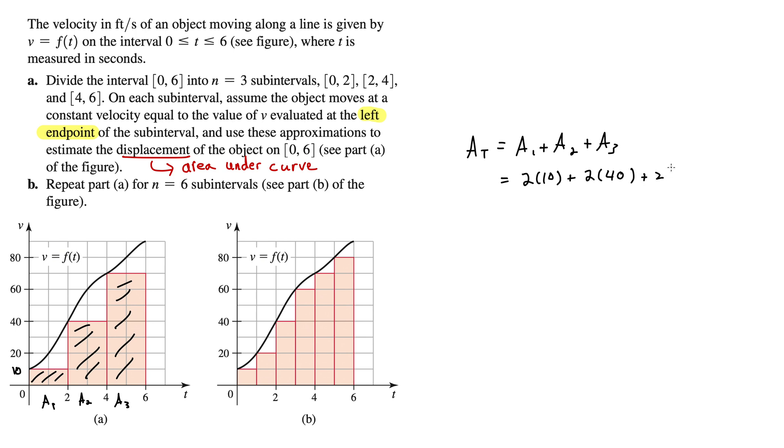And rectangle 3, the base is still 2, and the height is 70. That gives us 20 plus 80 plus 140. You'll have a lot of just adding things up like this in these exercises. How about 240? And this is for part A here, so let's be very clear. The displacement is 240 feet. How did I know it was feet? We go back up here to where velocity is given in feet per second, so then displacement must be in feet.